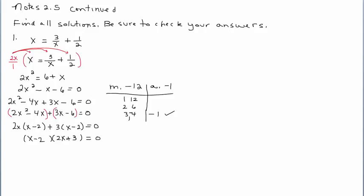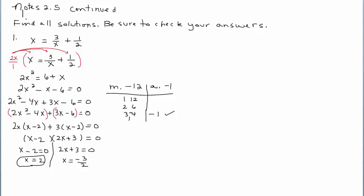We can now factor into the binomial (x minus 2) times (2x plus 3). Setting each factor equal to zero and solving: x minus 2 equals 0 gives x equals 2; 2x plus 3 equals 0, subtract 3 and divide by 2, gives x equals negative three-halves. Checking: plugging in 2 gives 3/2 plus 1/2 equals 4/2 — that checks. Plugging in negative 3/2 gives negative 2 plus 1/2 equals negative 3/2 — that also checks.